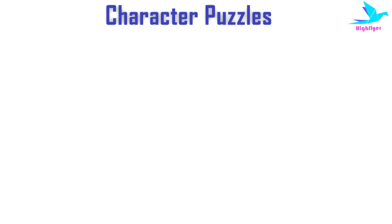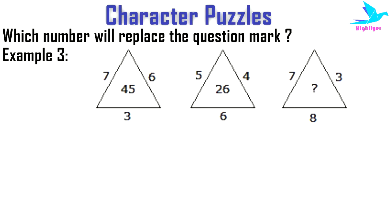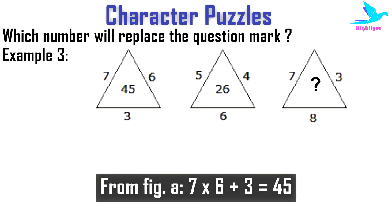In the third example, we again see three figures with a question mark in the third figure. Looking at figure A, the relation is 7 × 6 + 3 = 45 — meaning the product of the numbers at the two sides of the triangle, when added with the number at the base, gives the number at the center.